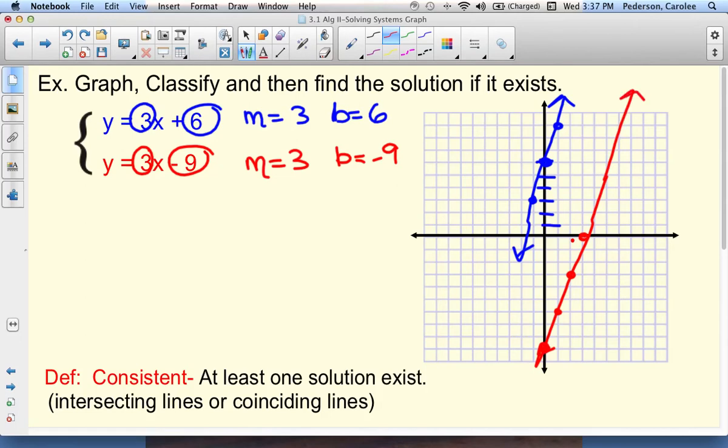Notice that these two lines do not intersect. The reason why they don't intersect is they have the same slope. They are what we call parallel.